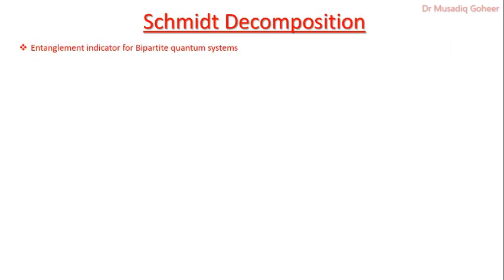Schmidt decomposition is an entanglement indicator for bipartite quantum systems. Suppose we have two subsystems A and B whose Hilbert spaces are H_A and H_B respectively. We have a general pure state psi which belongs to the composite Hilbert space of A and B. This pure state psi can be written as the sum over orthonormal bases of A and B, where u_i and v_i are orthonormal bases of